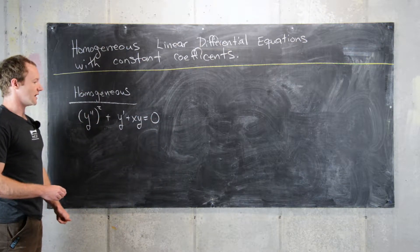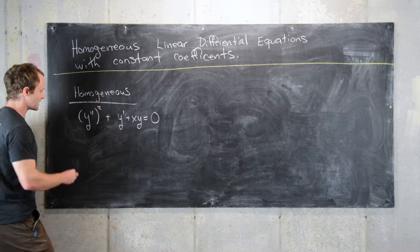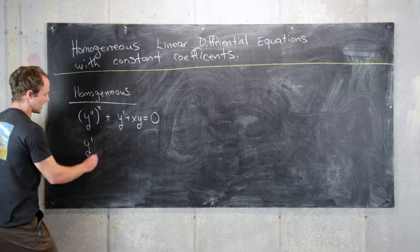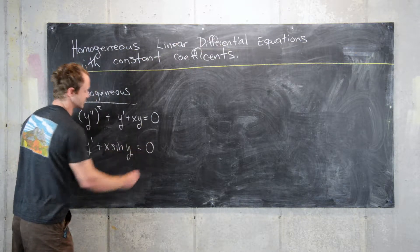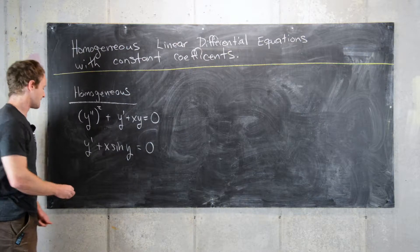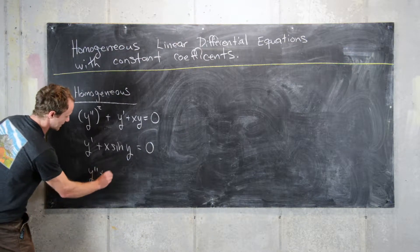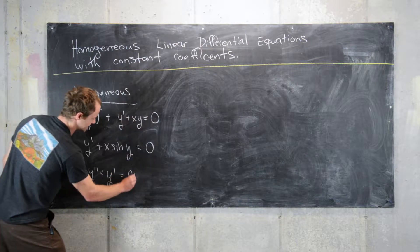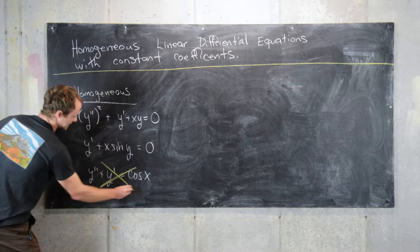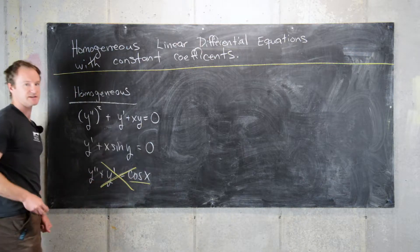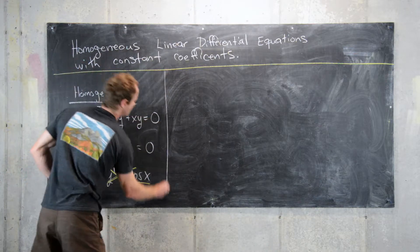Another homogeneous example would be y' + x·sin(y) = 0. A non-example would be something like y'' + y' = cos(x), because that cosine of x on the right-hand side makes it non-homogeneous.